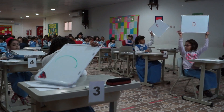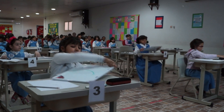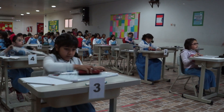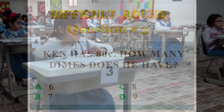Everybody's correct except number 3. Question number 3. Ken has 80 cents. How many dimes does he have? Again, Ken has 80 cents. How many dimes does he have? A: 6. B: 7. C: 8. D: 9.